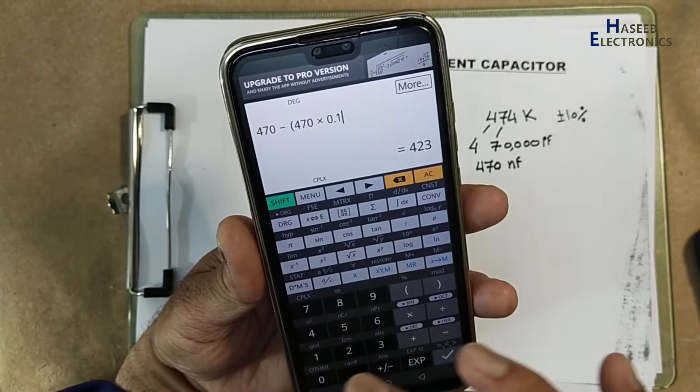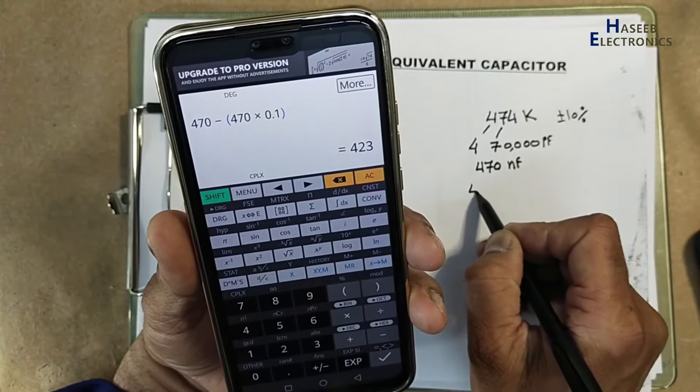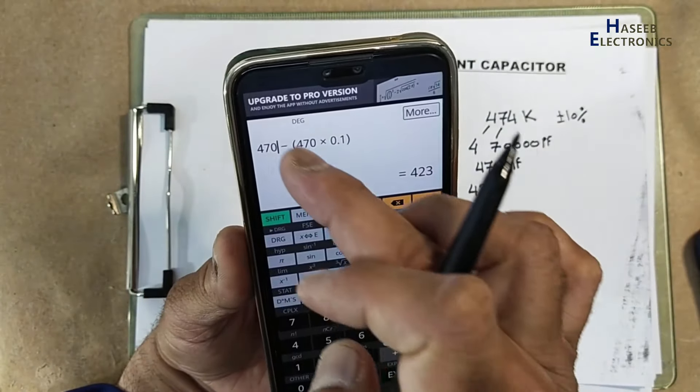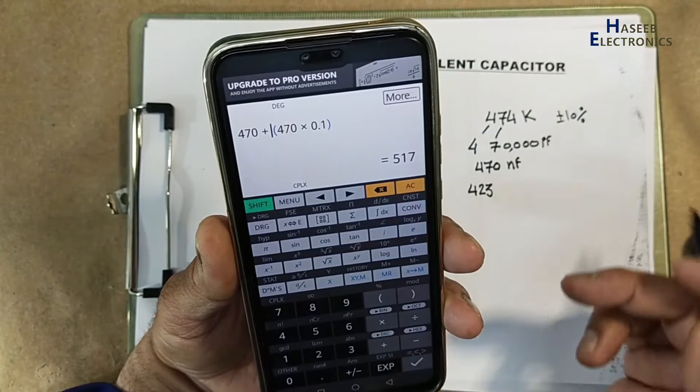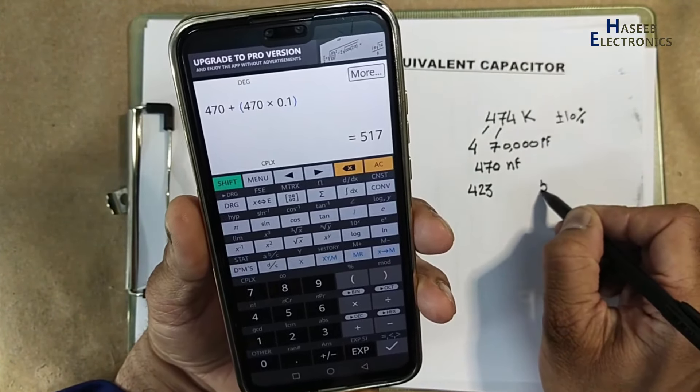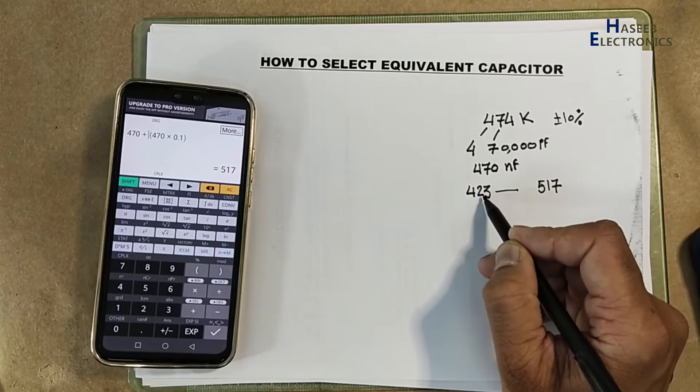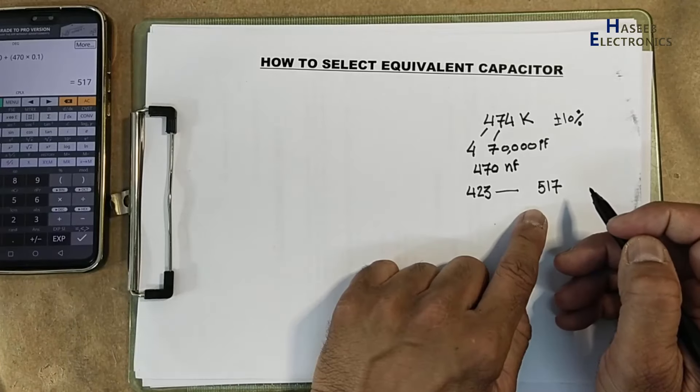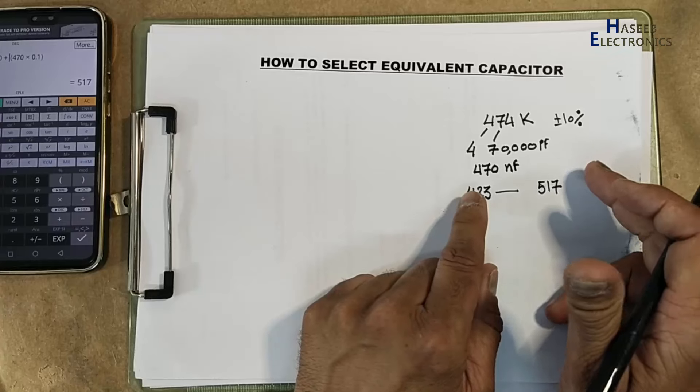Multiply with 0.1, that's 423. And if we calculate with plus, 517. Its value may reach from 423 nF to 517. If we can find capacitor within this range, that will work in this place.